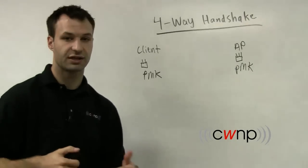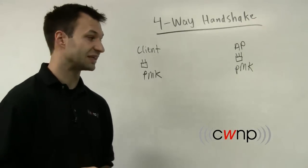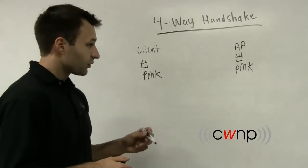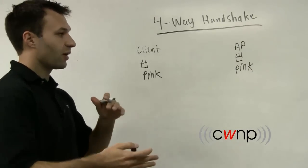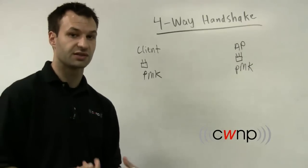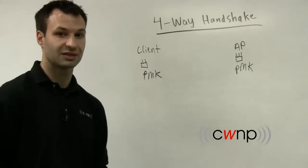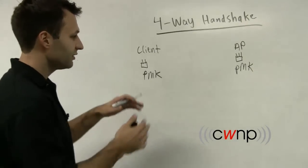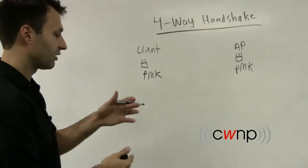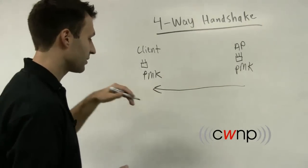So the whole point of the four-way handshake is to turn this source keying material, the PMK, into data encryption keys. Basically the four-way handshake is an exchange of information that's going to facilitate this process of creating encryption keys. But in order to create the unicast and group encryption keys, these stations both need a little bit of information. So the access point is going to start by sending the first frame over to the client.